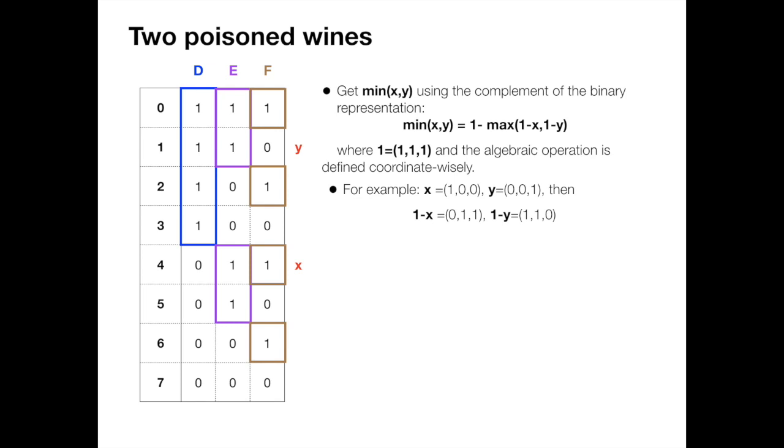So remind that x and y represent the number of the poisoned wines, and what we are going to prepare is three drinks D, E, and F using the complement of the binary representation. So more precisely, the drink D contains bottle 0, 1, 2, 3. The drink E contains bottle 0, 1, 4, 5, and so on.